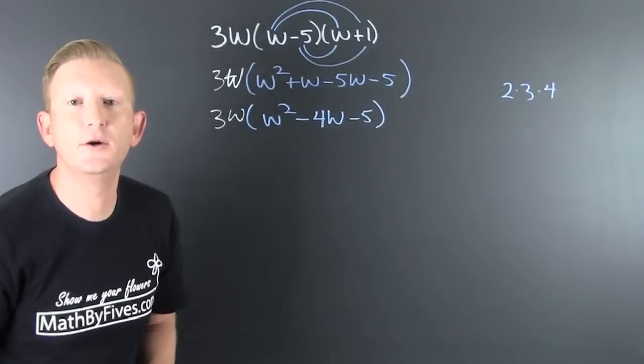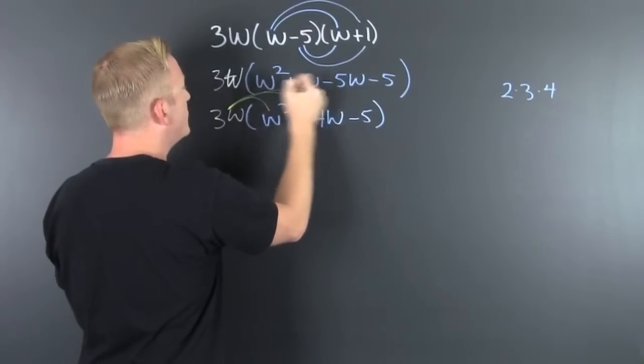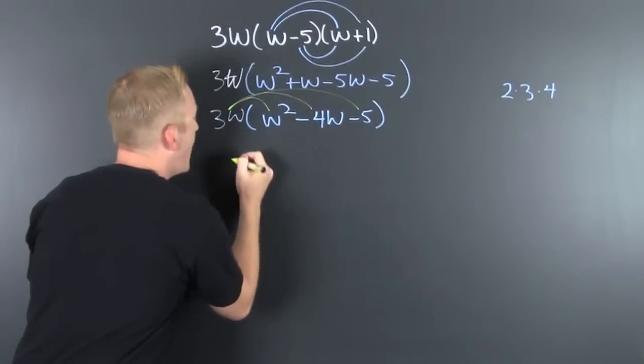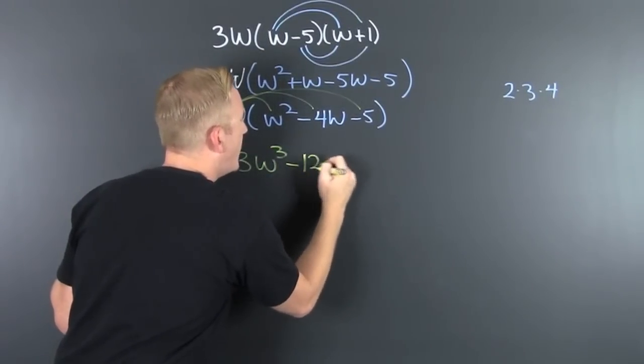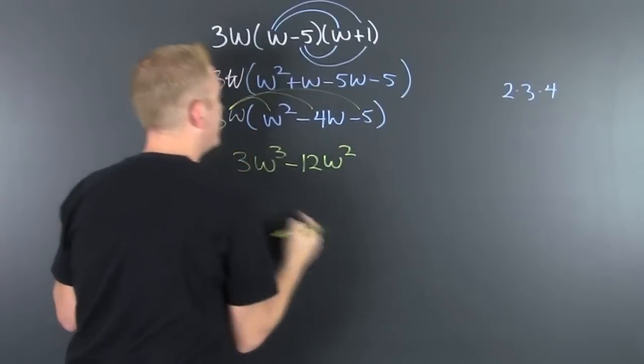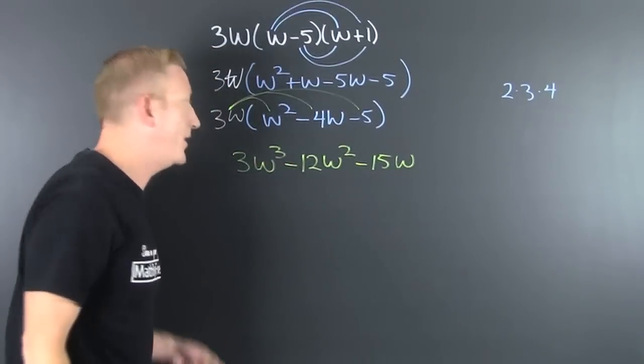And now it goes... and we have three W to the third, minus twelve W squared, minus fifteen W.